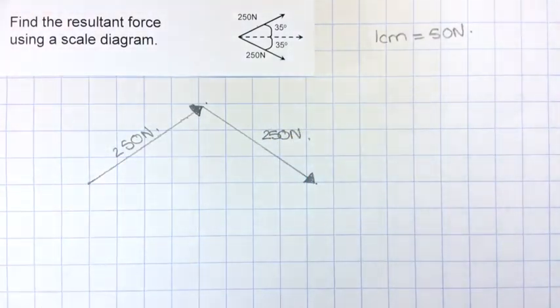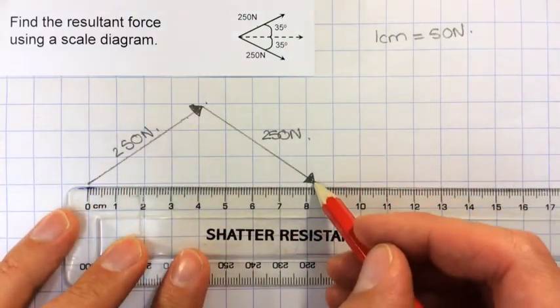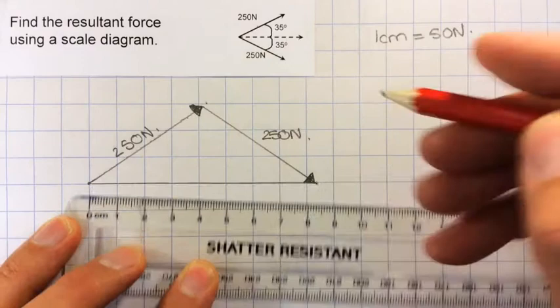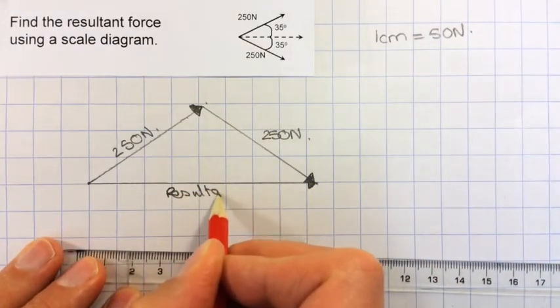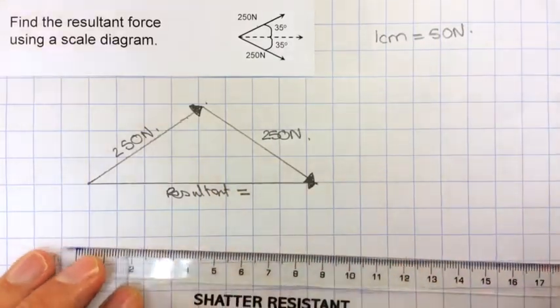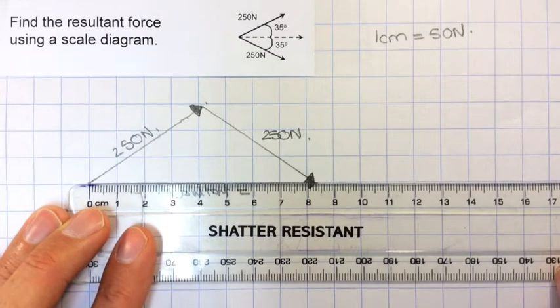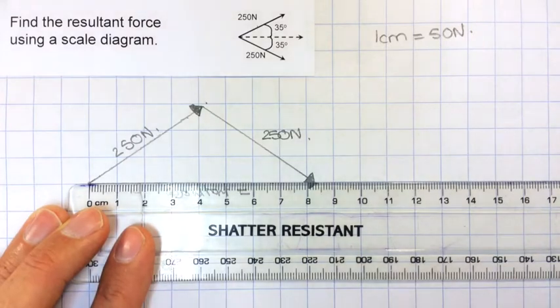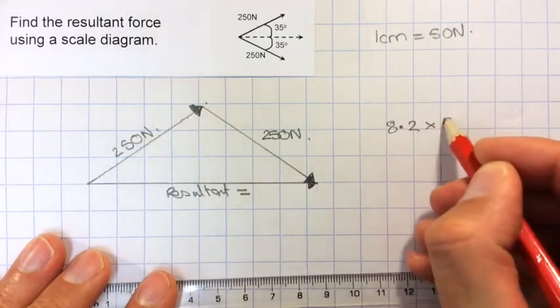Then the resultant vector I can draw in goes from the very start of this one to the end of this one. When I do that, I get my resultant is going to be equal to... I'm going to measure this and that looks like 8.2 cm, which would be 8.2 times 50.